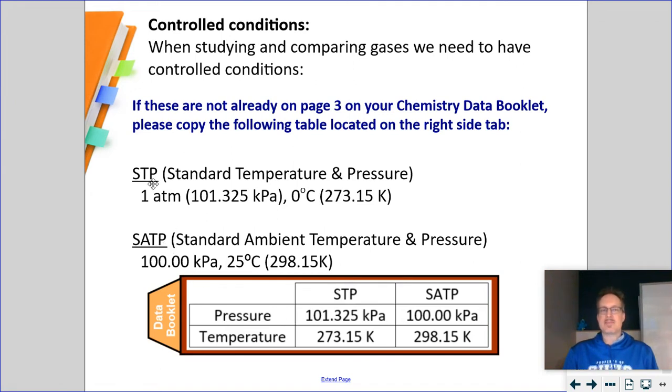SATP is different than STP. STP is standard temperature and pressure. SATP is standard ambient temperature and pressure. This is the difference between 0 degrees Celsius and 25 degrees Celsius, roughly room temperature. STP was at 101.325 kilopascals. SATP is at 100 kilopascals. So, they differ by a little bit when it comes to pressure. They differ by a lot when it comes to temperature.